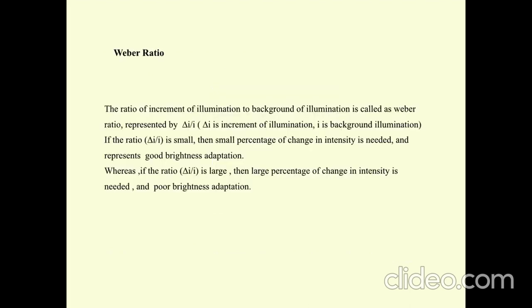Weber Ratio. The ratio of increment of illumination to background of illumination is called Weber Ratio, represented by ΔI/I, where ΔI is increment of illumination and I is background illumination. If the ratio ΔI/I is small, then small percentage of change in intensity is needed and it represents good brightness adaptation. Whereas if the ratio ΔI/I is large, then large percentage of change in intensity is needed and poor brightness adaptation.